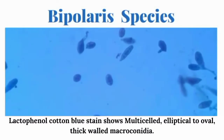Let's start with the first one, which is the Bipolaris species. The distinguishing feature of Bipolaris species is the production of multi-celled, elliptical to oval, thick-walled macroconidia with a smooth surface. If we take a close inspection of these conidia in preparation using a stain such as lactophenol cotton blue, or LPCB,